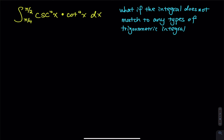We already discussed two types of trigonometric integrals so far. The first type is the integral of sine raised to some power times cosine raised to some power. The second type is the integral of tangent raised to some power times secant raised to some power. What if you have a trigonometric integral that doesn't match any of the cases? There is no codebook recipe. You have an integral: cosecant to the fourth times cotangent to the fourth — it doesn't match any of the cases you have studied so far.